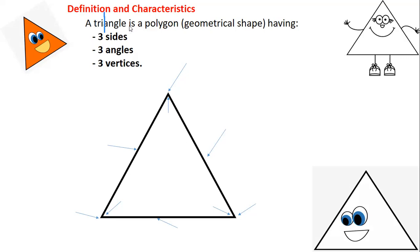A triangle is a polygon — a geometrical shape. In any triangle, we always have three sides, three angles, and three vertices. As you can see, every element comes in three. That's why we call it tri. This definition and these elements should be memorized.